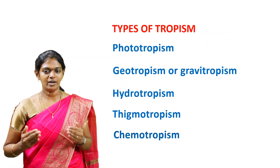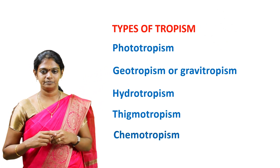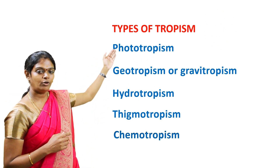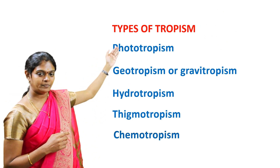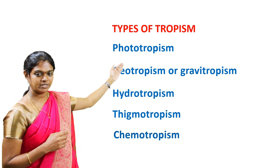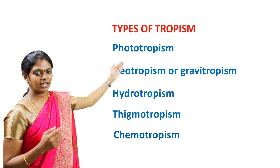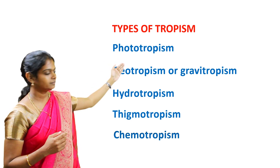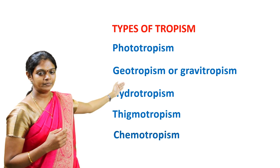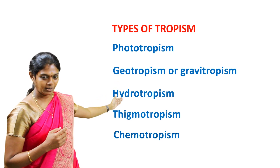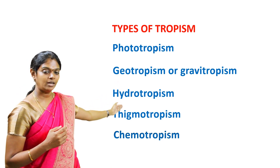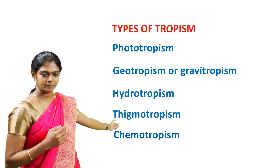Now let's see the types of tropism: phototropism, geotropism or gravitropism, hydrotropism, thigmotropism, and chemotropism.